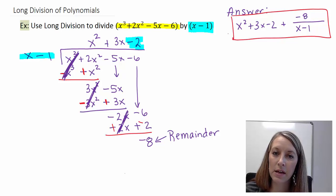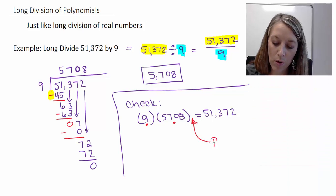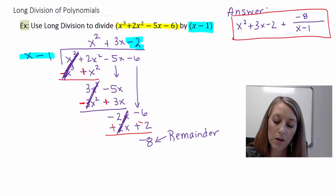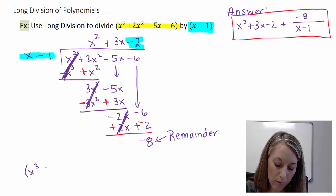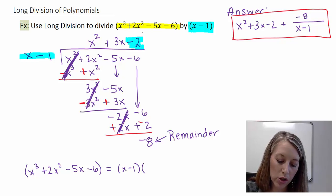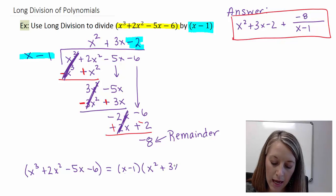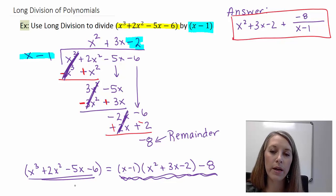Let me talk about a different way it could ask it. If it wanted to know how to check this, we mimic the check process — we take our divisor times our quotient, and if we have a remainder we include it. Another way to write this is: the starting polynomial x cubed plus 2x squared minus 5x minus 6 equals our divisor x minus 1, times our quotient x squared plus 3x minus 2, plus our remainder of negative 8. If we multiply it all out and simplify, we get back to what we started with.